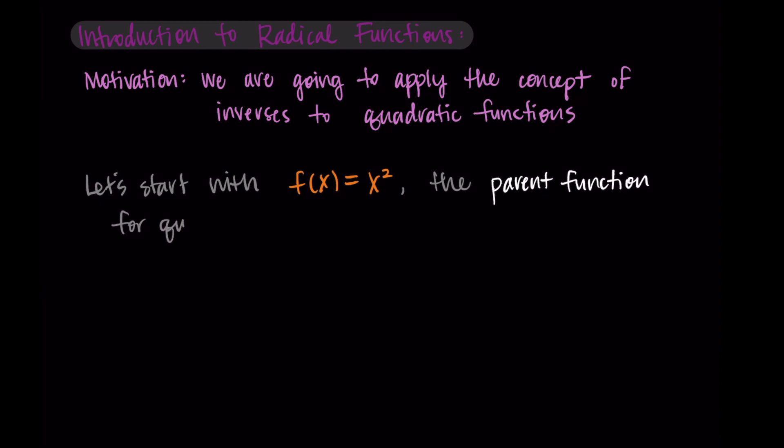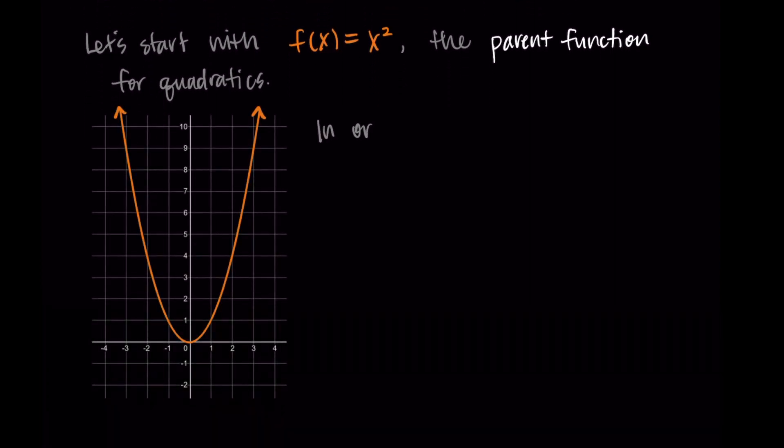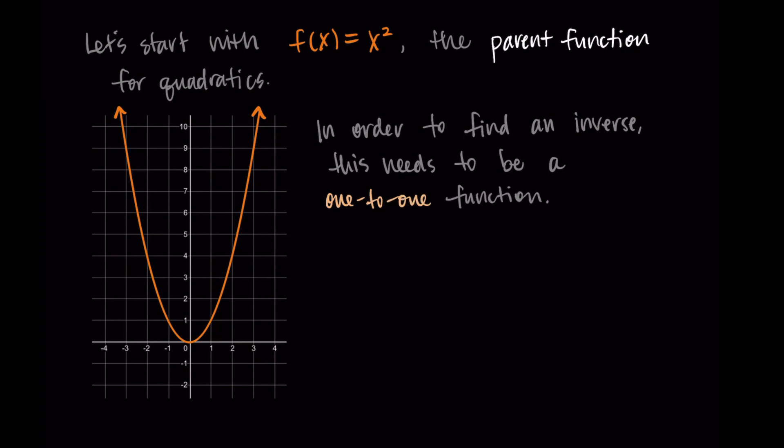This is our most basic example of a quadratic function. In order for it to have an inverse, it's going to need to be a one-to-one function. But right now this isn't one-to-one. Basically every output except for zero has multiple inputs. So what we're going to need to do is make this a one-to-one function. To make this happen, we're going to do something called restricting the domain. This means we just take a portion of the inputs and look at that function and see if that function's one-to-one.